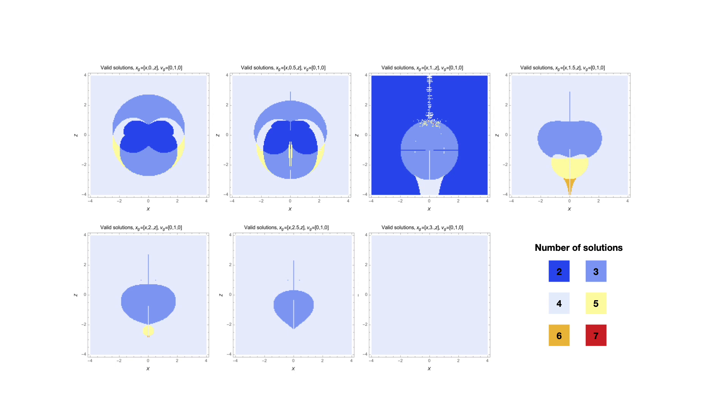There is a region of 6 solutions at y equals 1.5, and for y equals 3 or more, there are 4 solutions everywhere.